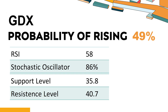GDX has a 49% probability of rising in stock price. When the probability of rising is lower than 50%, it means that the probability of falling is relatively high. Combining multiple technical analysis indicators, GDX has four bullish signals and three bearish signals.